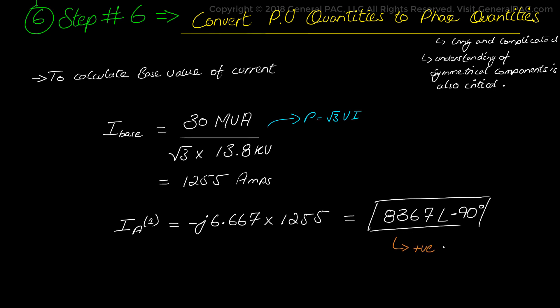So this is the positive sequence current values in ampere quantities. The other 2 sequence components which is the negative sequence and the zero sequence, remember they will be zero in a perfectly balanced 3 line to ground fault.